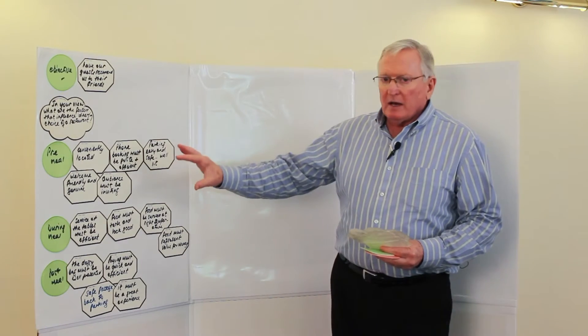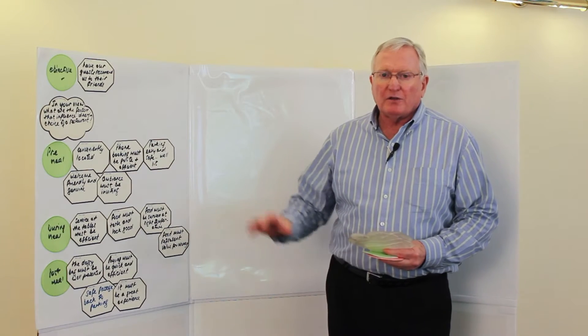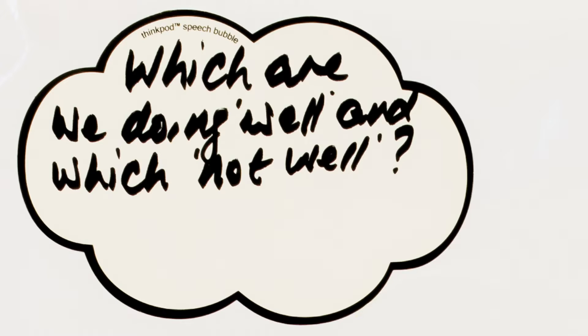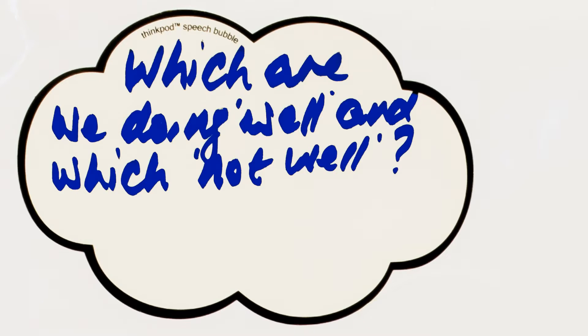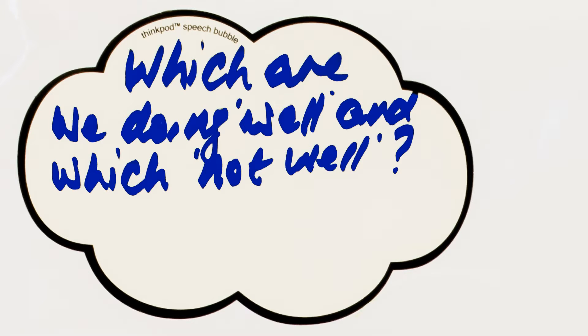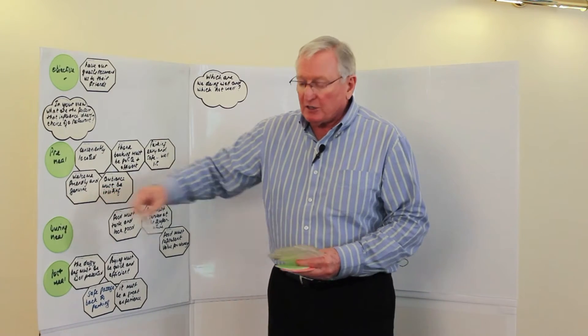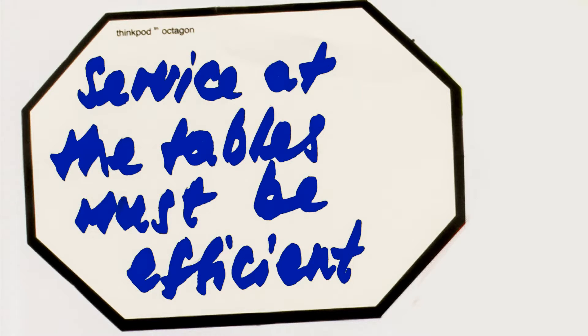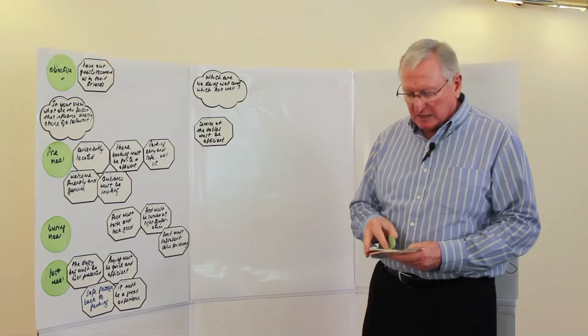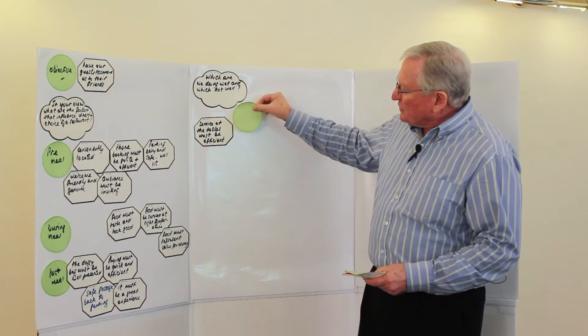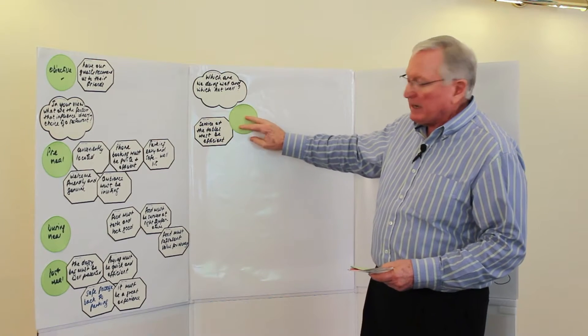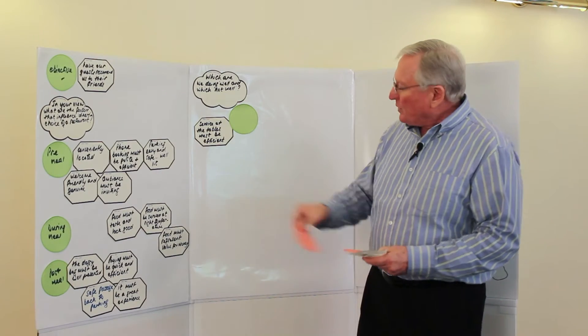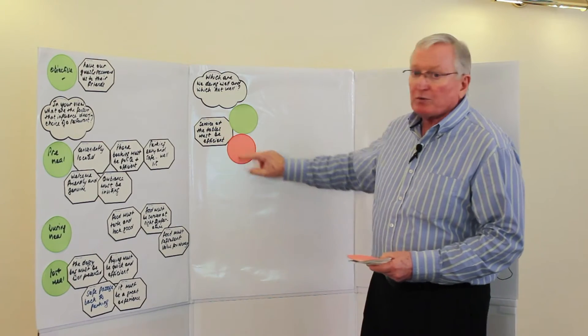So let's assume now that we've identified which the key elements are. The next step in the process would be for us as the owners of this restaurant to ask ourselves the question, which of these are we doing well and which are we not doing well? So let's just take this during the meal issue and say service at the table. Is our service efficient and acceptable to the customer? And we might ask ourselves the question using a green indicator. Why is it considered good? Or if we think that there are weaknesses in what we're doing, we would use a red one and say this is what we're not doing well.